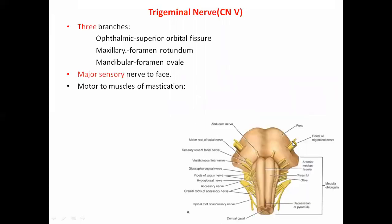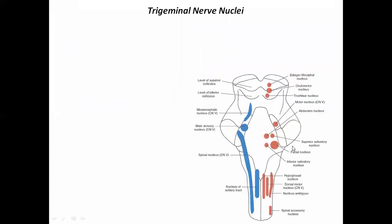The larger root is sensory and the smaller root is motor. Sensations from outside pass into the sensory nuclei, while impulses from the motor nucleus travel outward to the muscles of mastication. Both the motor and sensory components can be identified in the trigeminal nerve.